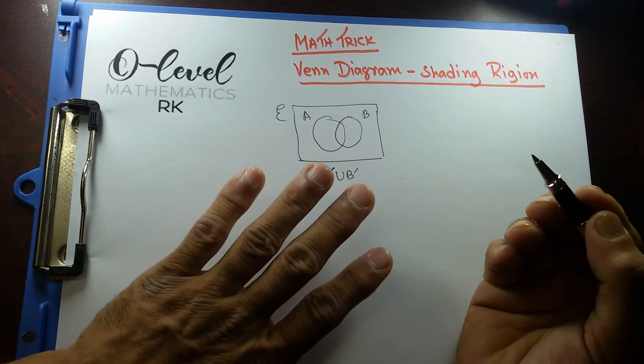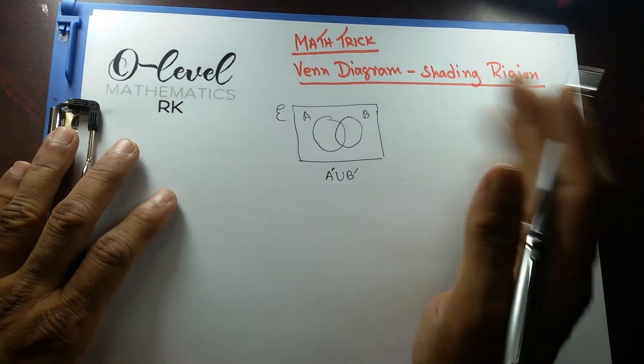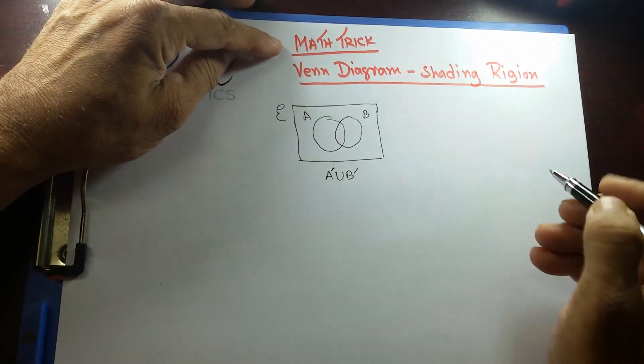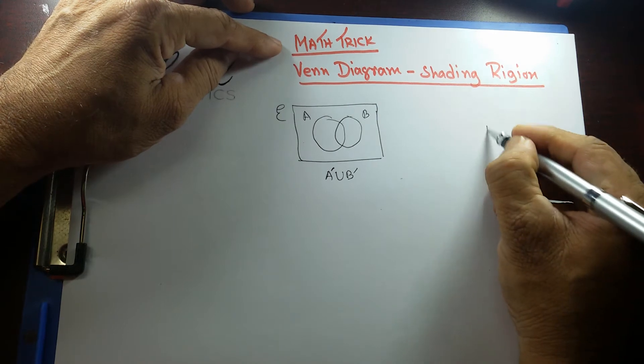Sometimes it's a little tough, a little confusing. So, what I'm going to do in the Math Trick, I'm going to use De Morgan's Law.